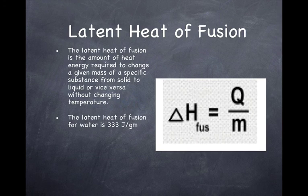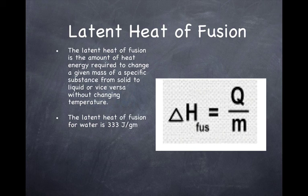The latent heat of fusion is the amount of heat energy required to change a given mass of a specific substance from solid to liquid, or vice versa, without changing the temperature. So if I had ice — solid water at 0 degrees — for it to change to water at 0 degrees with no temperature change, it would take 333 joules per gram. So the latent heat of fusion would be 333 joules per gram.